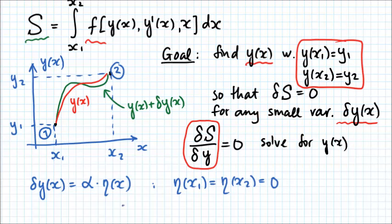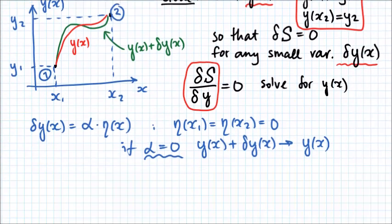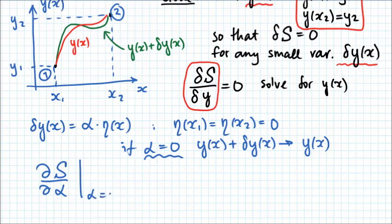If alpha equals 0, then our perturbation y of x plus delta y of x always goes back to simply y of x. So alpha equals 0 is the point of interest for this parameter, and we perturb it slightly positive or slightly negative to see what happens to the functional S. We write the partial derivative of S with respect to alpha, evaluated at alpha equals 0, and set this whole derivative to 0. Alpha equals 0 means we are recovering the function we are trying to find, and the derivative of S around that value being 0 simply means that S is stationary — or delta S is 0.